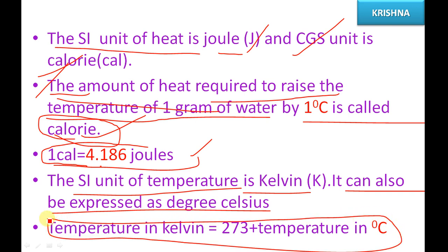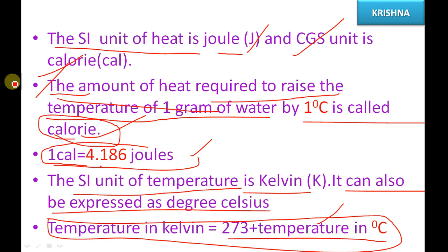There is an important relation between kelvin temperature and degree centigrade: temperature in kelvin equals 273 plus temperature in degrees C. So to summarize: heat is a form of energy that affects temperature; temperature is the effect and heat is the cause. Thank you friends for watching — see you in the next class.